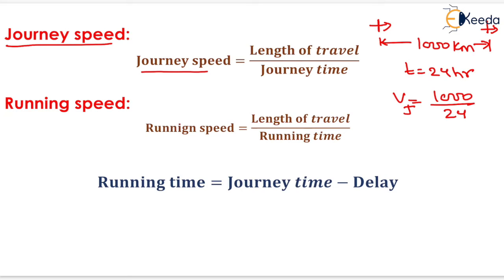If we want to compute the running speed, then we have to subtract the delay time from the journey time so that we will be able to determine the running time of the vehicle. If we divide the distance between the two points by the running time, then it will be the running speed of the vehicle. So running speed can be determined by length of travel divided by the running time, and running time can be determined by subtracting the delay from the journey time.